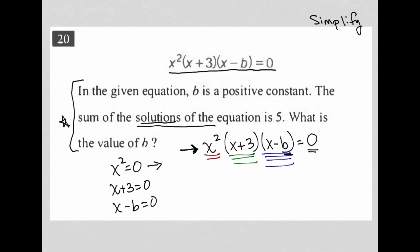So, what happens in this case? X squared equals zero, that tells me that X is equal to zero. I square root both sides, I get X equals zero. X plus three equals zero? Well, I can subtract three from both sides, and that would mean that X is equal to negative three. And X minus B equals zero, I can add B to both sides, and that would mean that X is equal to B.